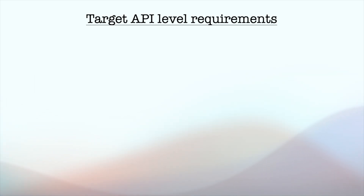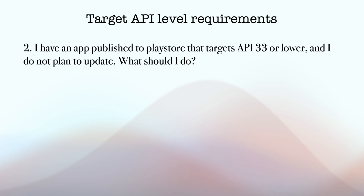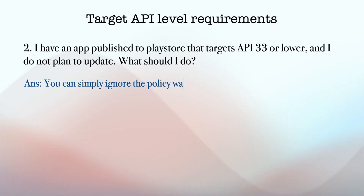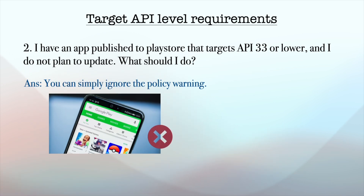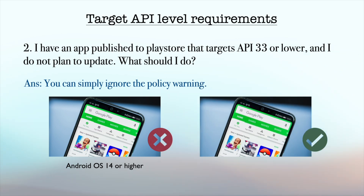Next question: I have an app published to the Play Store that targets API 33 or lower and I do not plan to update — what should I do? If you don't want to make any future updates to your app, you can ignore this policy warning. However, your app will not be available in the Google Play Store to new users on devices running an Android OS newer than what your app targets. It will be available only to users with devices running an Android OS with an API level of your app or lower.